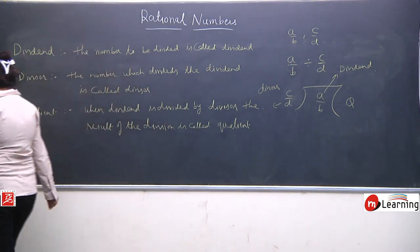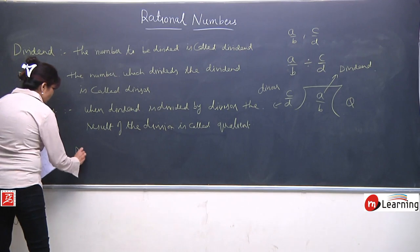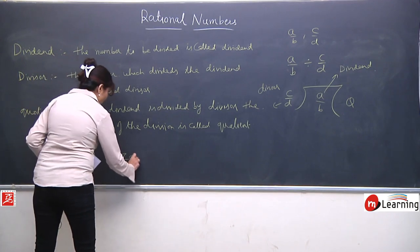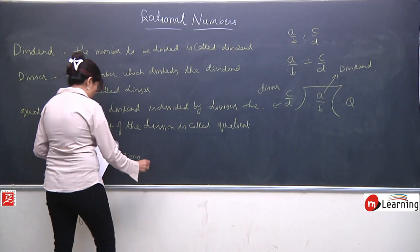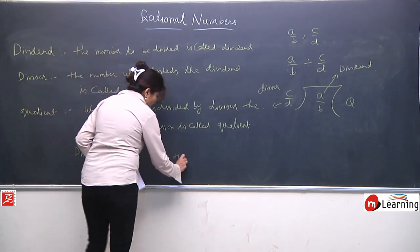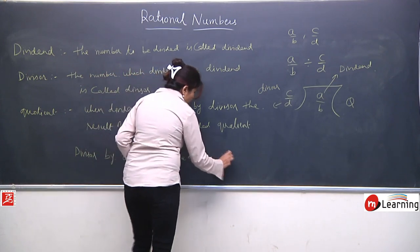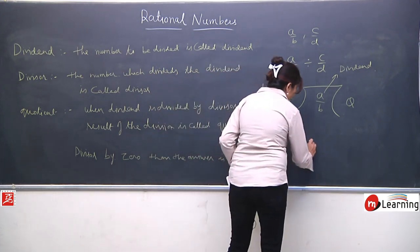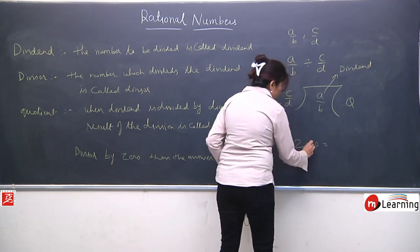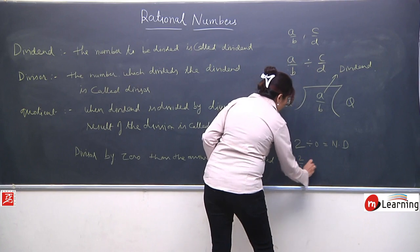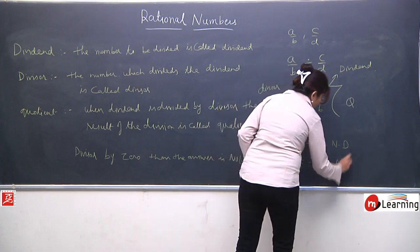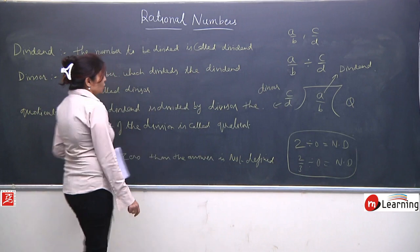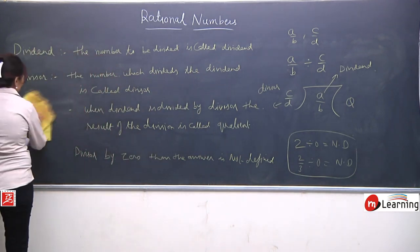Ab hum iski kuch important properties dekhenge. Divisor jo hoga, means jis se hum divide kar rahe hain, yeh hamesha non-zero hona chahiye. Agar divisor zero hai, then the answer is not defined. Like 2 divided by 0 — not defined. Any rational number divided by 0, then your answer is not defined.